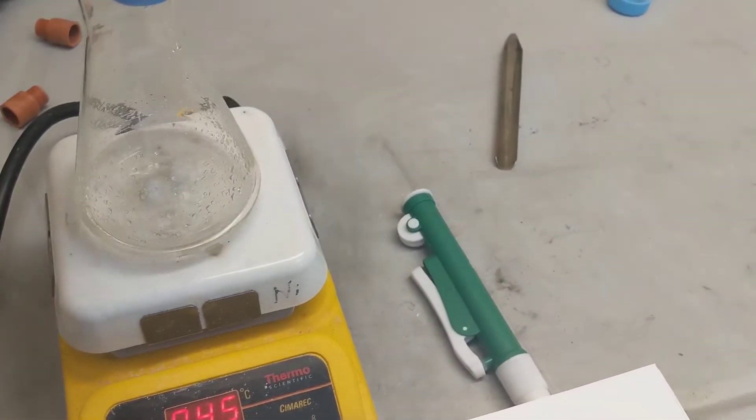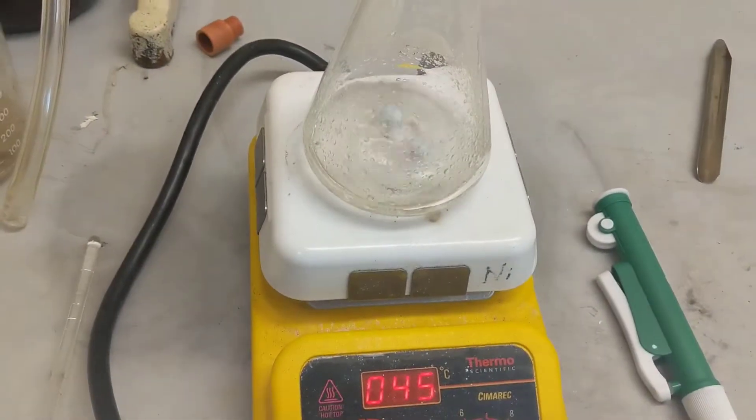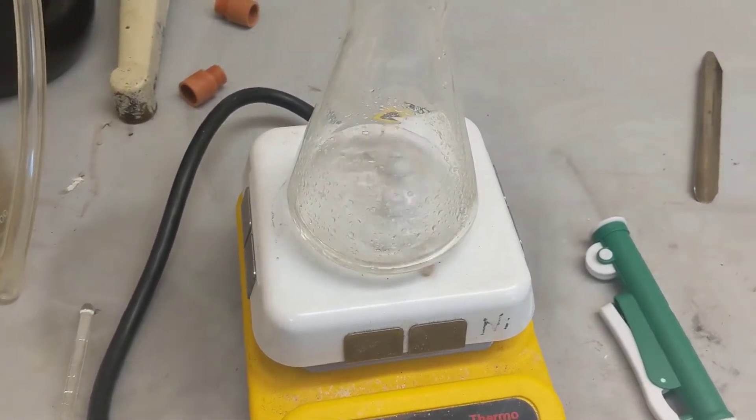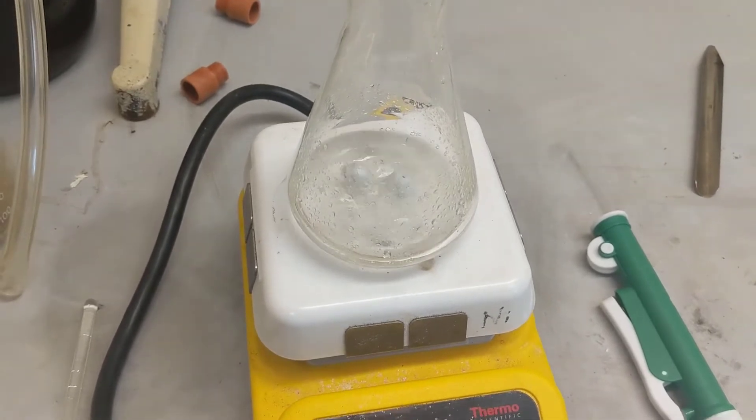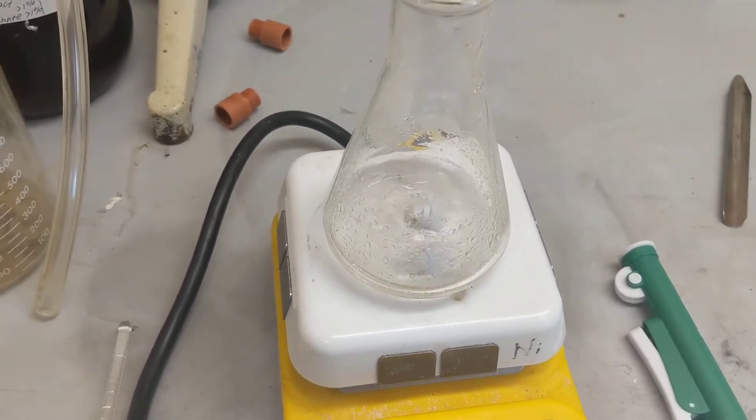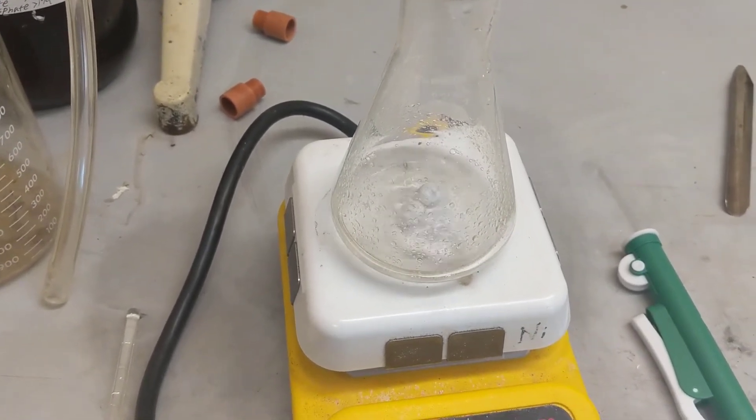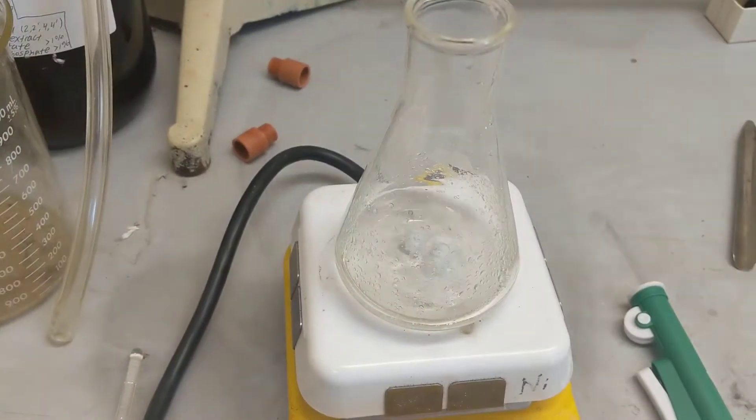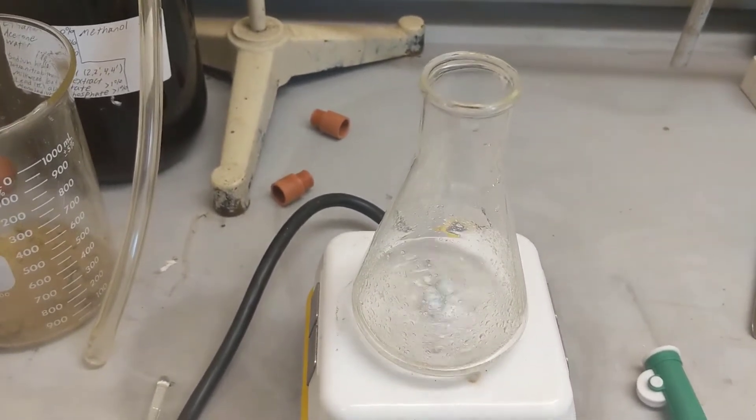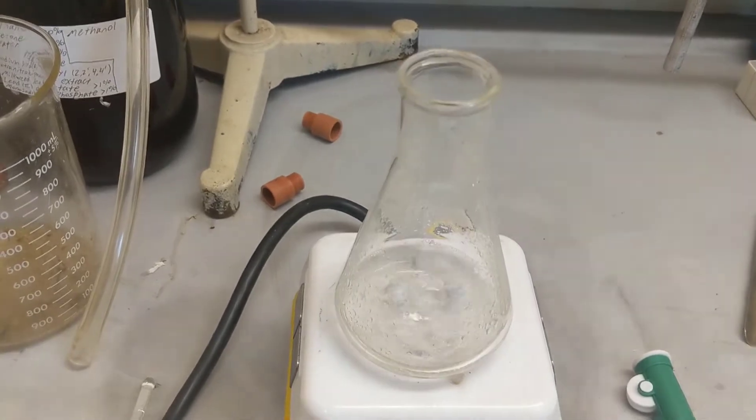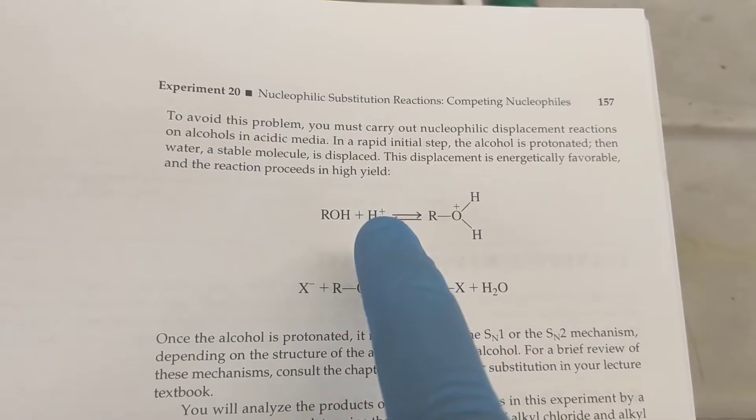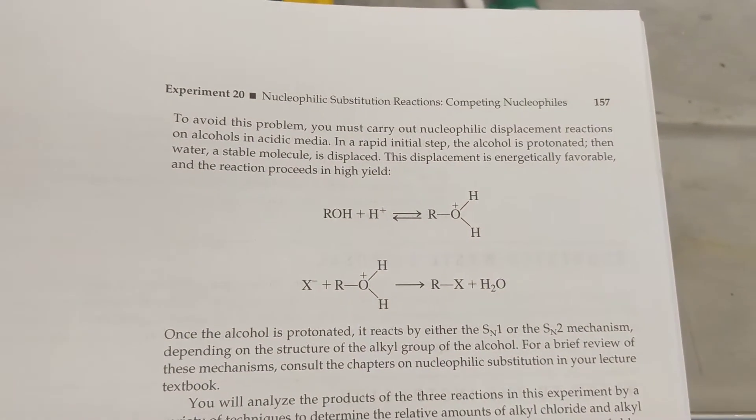In general, alcohol does not readily react in a simple nucleophilic displacement reaction. If they are attacked by a nucleophile directly, hydroxyl ions, a strong base, must be displaced. Such a displacement is not energetically favorable and cannot occur to a reasonable extent. To avoid this problem, you must carry out the nucleophilic displacement reaction of alcohols in an acidic or protic medium. In a rapid initial step, the alcohol is protonated, and then water, a stable molecule, is displaced.